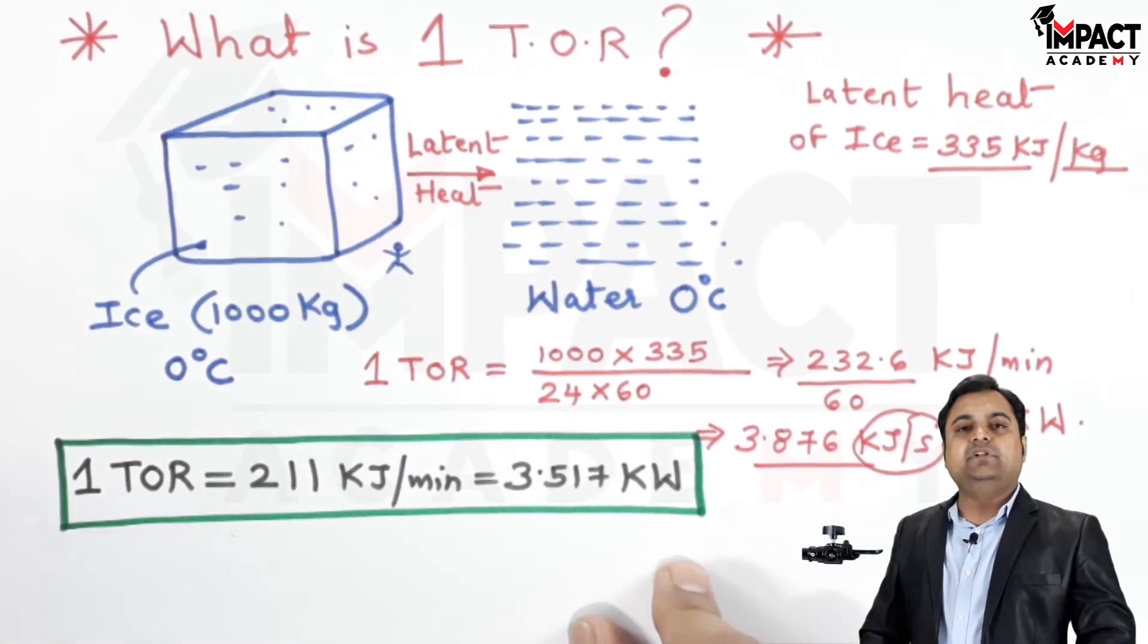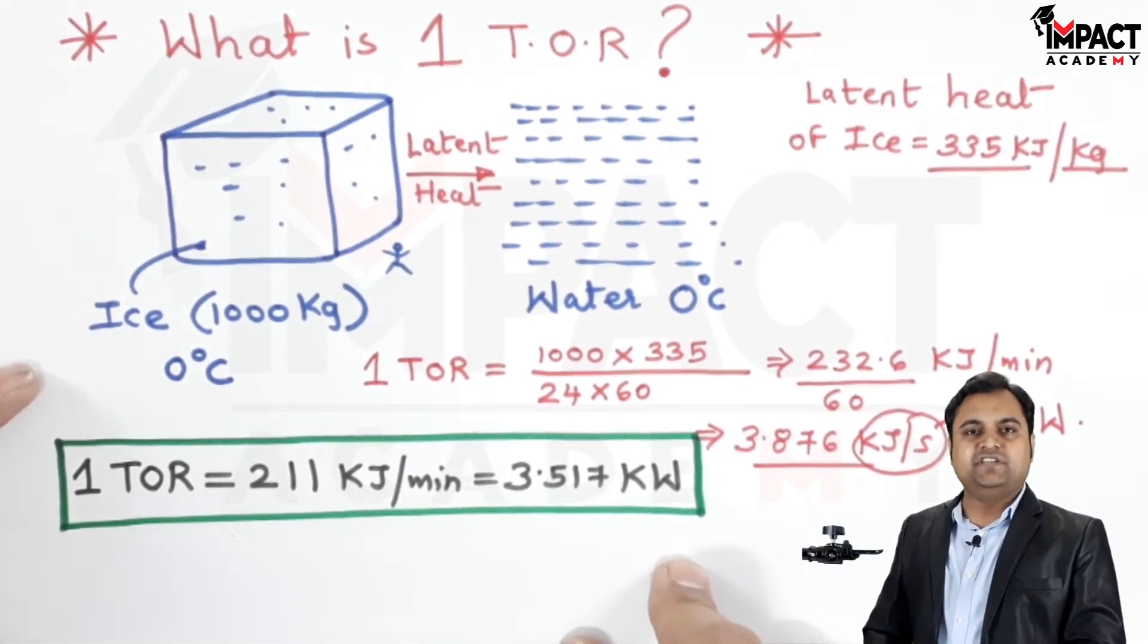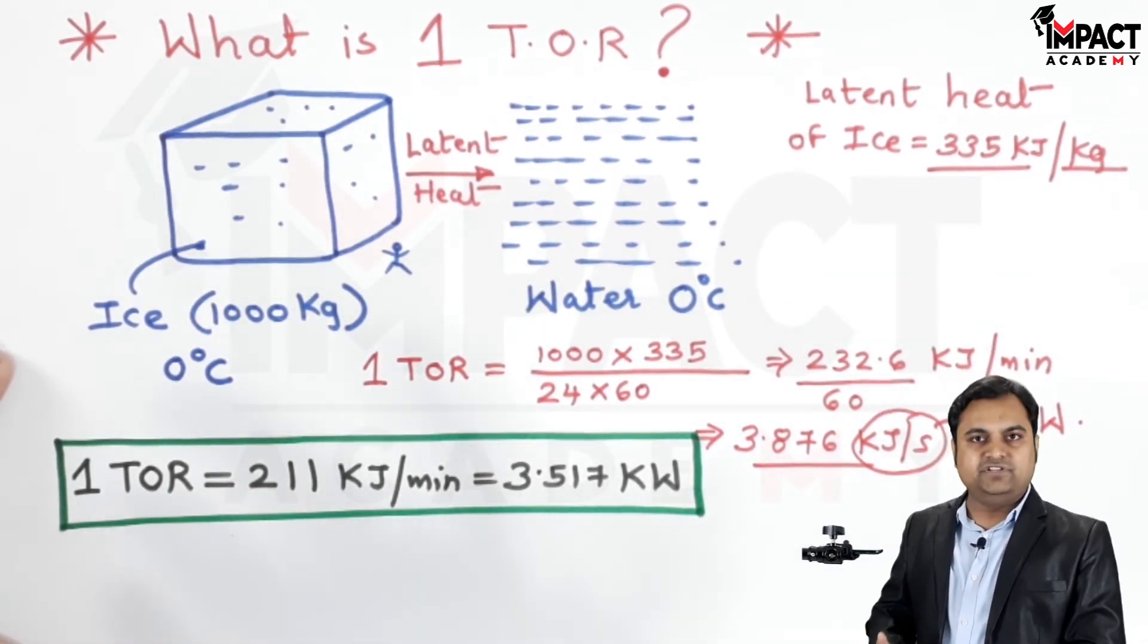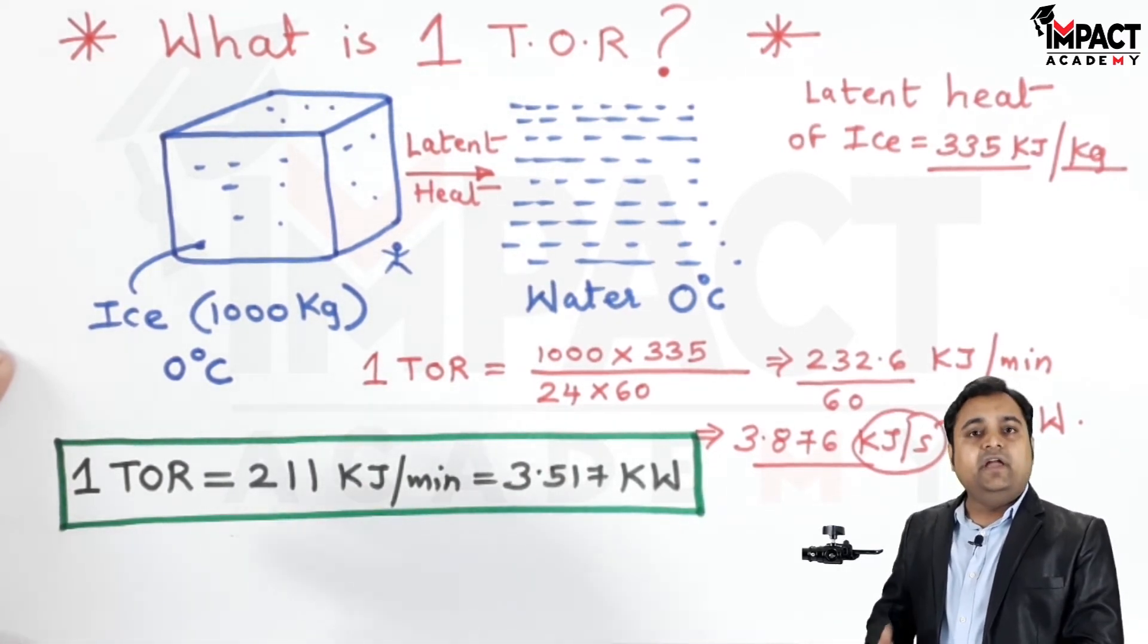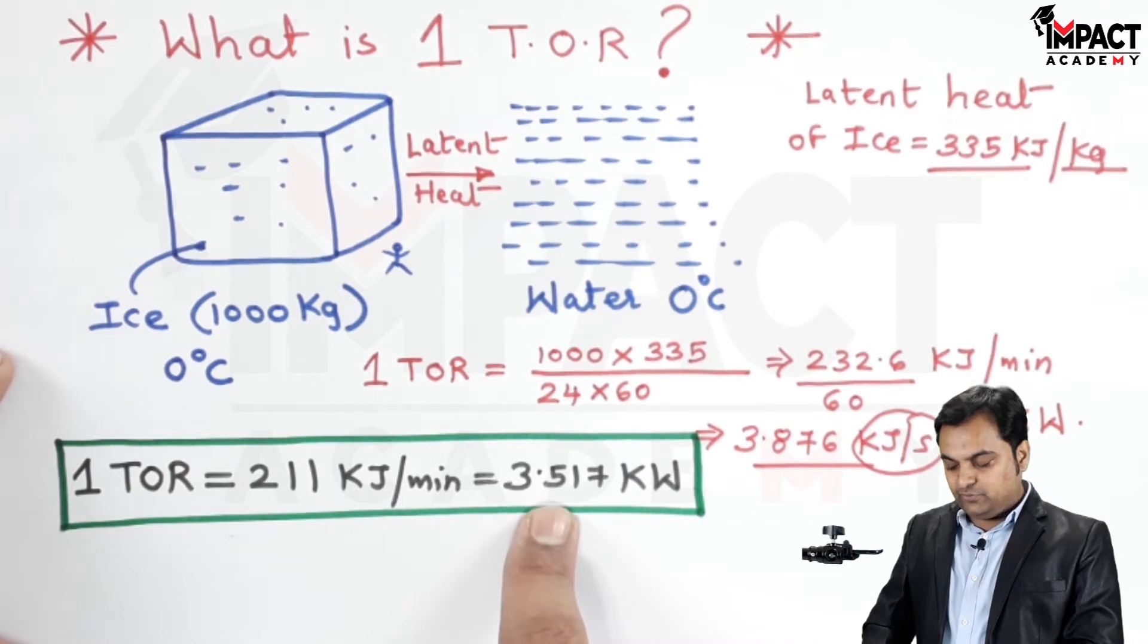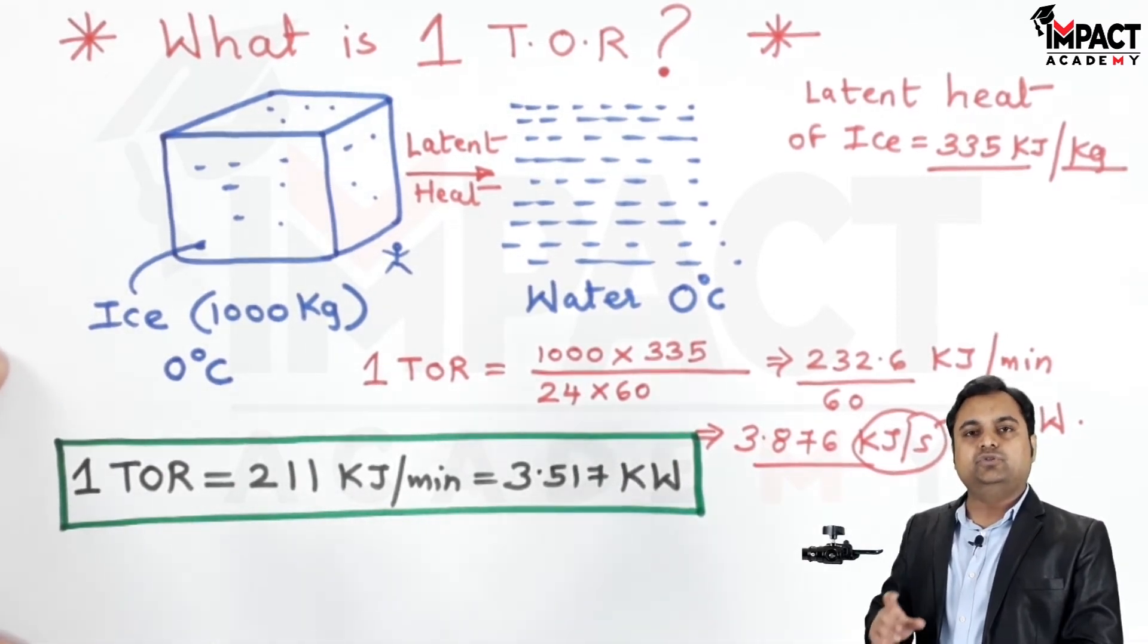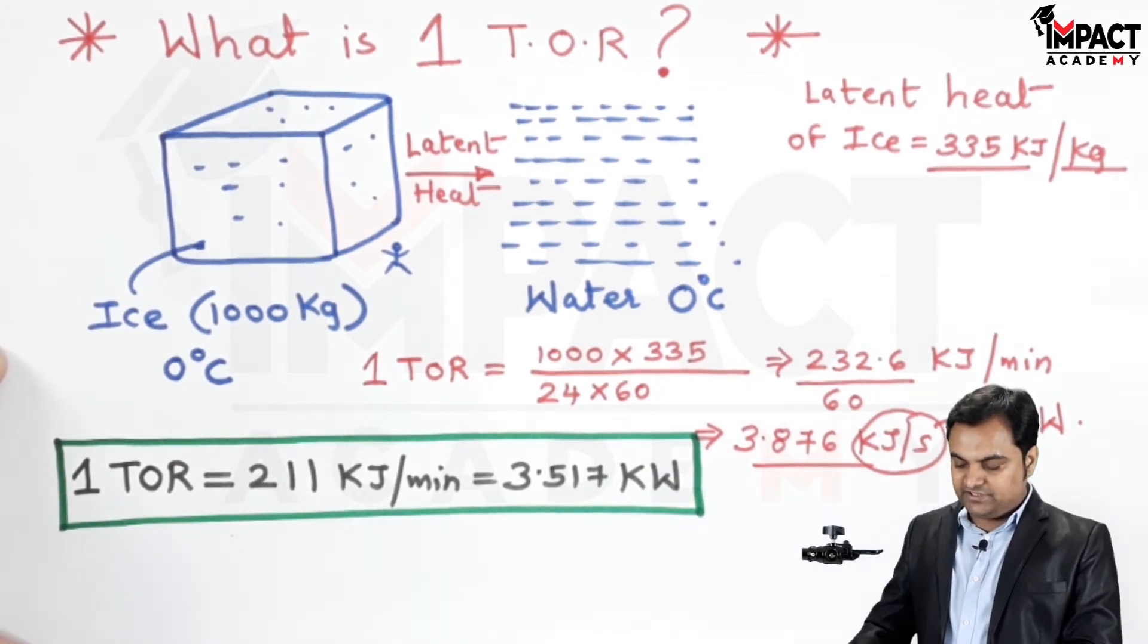That is the meaning of one ton of refrigeration. Similarly, when we go for purchasing an AC, we purchase it in terms of tons. So that ton of refrigeration is nothing but the refrigeration effect as I explained to you. If it is two tons, this value gets doubled. If it is three tons, multiply this by three. So the value of refrigeration effect will go on increasing.